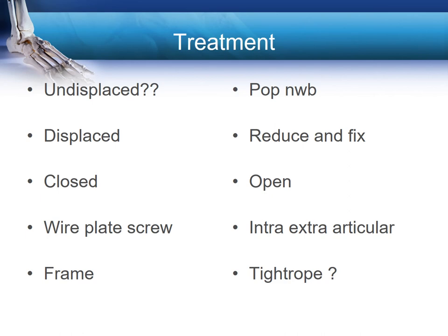If there's displacement, we know that reduction leads to a better outcome, so displaced Lisfranc injuries need to be reduced and stabilized. Closed reduction is extremely difficult, and by and large most people now open the Lisfranc injury to achieve anatomical reduction. In terms of hardware, the options are wires, plates, screws, or external fixators. Few surgeons now use wires, as they are less stable and carry a risk of sepsis in injured soft tissues. More people now tend to use bridge plates across Lisfranc's joints, thereby not creating a secondary injury to the chondral surfaces.